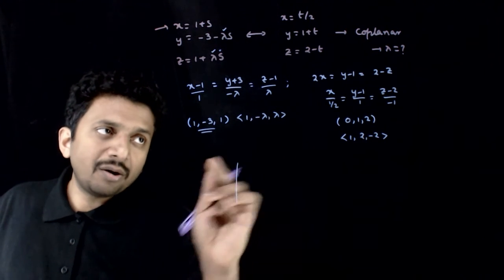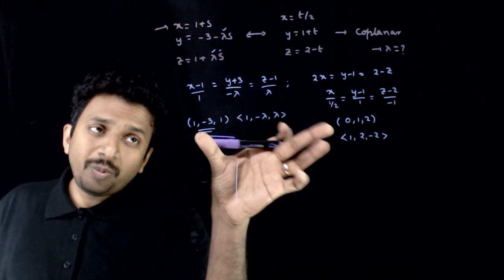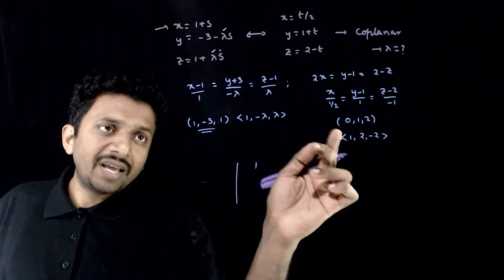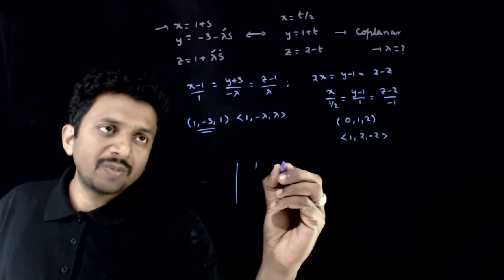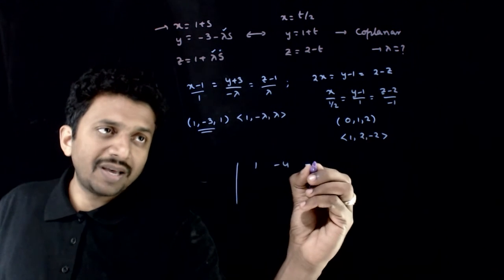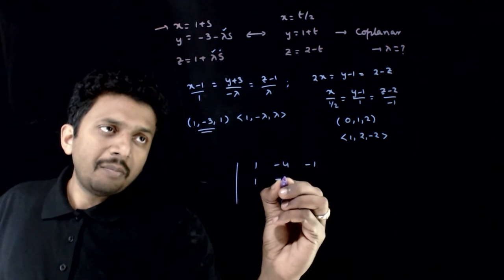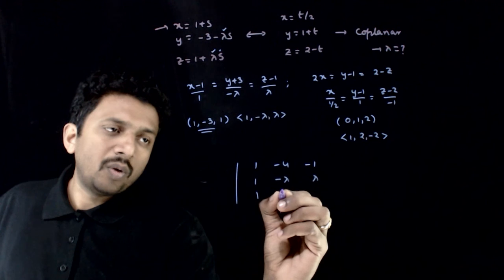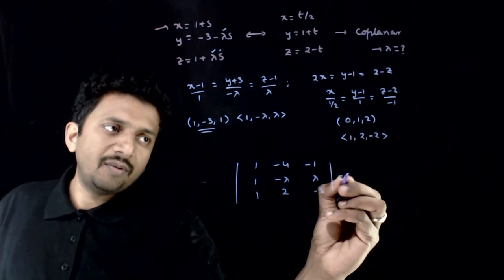That is, the determinant of the vector—the vector joining these two points is 1 minus 0 is 1, minus 3 minus 1 is minus 4, 1 minus 2 is minus 1—1, minus lambda, lambda; 1, 2, minus 2 should be equal to 0.